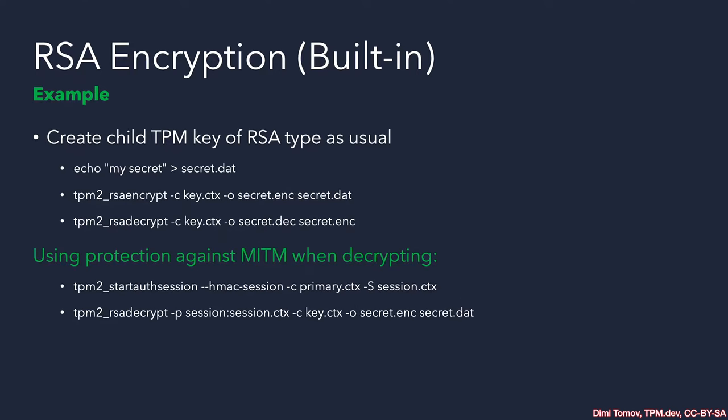Here is an example. The first example does not use parameter encryption — once we have our data, we execute the two tools and perform the forward operation and the reverse operation. The second example starts an HMAC session for parameter encryption and feeds it to the TPM2-RSA-Decrypt tool. We need to specify that we are feeding a session context. Using RSA encryption on the TPM can be rather slow, which is why I would recommend using an ECC primary key and the symmetric encryption we saw earlier.